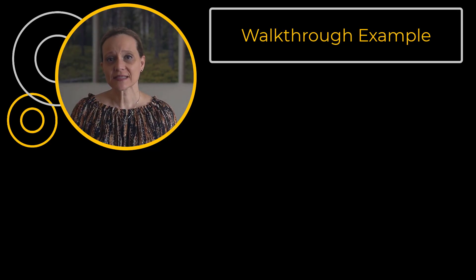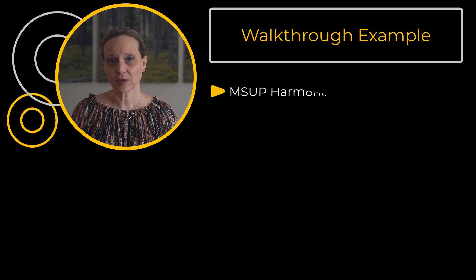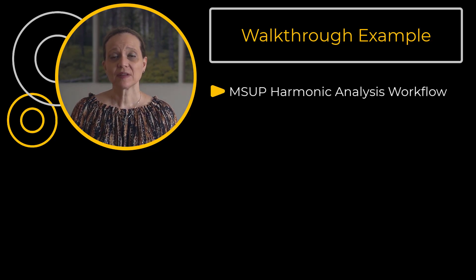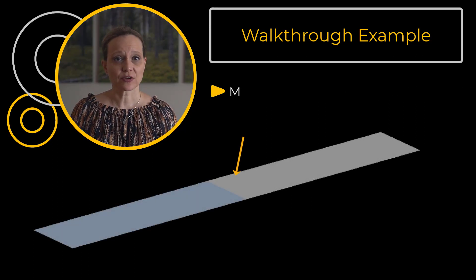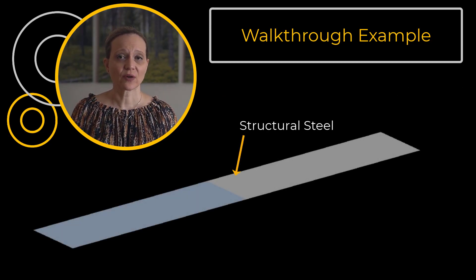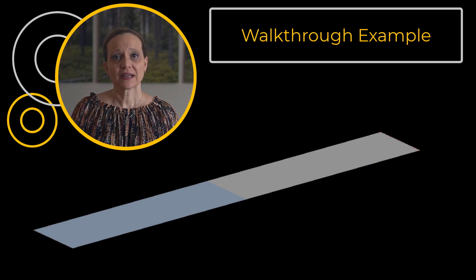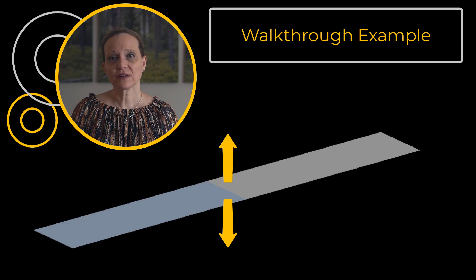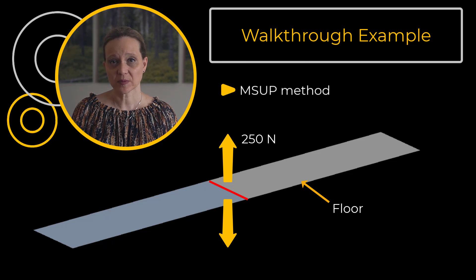In this example, we will see how to create a mode superposition harmonic analysis workflow on the project page with the help of a simple plate geometry. It is made of structural steel and both ends of the plate are fixed. An alternating force of 250 newtons is applied at the centerline, which represents an unbalanced motor on a floor, and this model is solved using the mode superposition method.